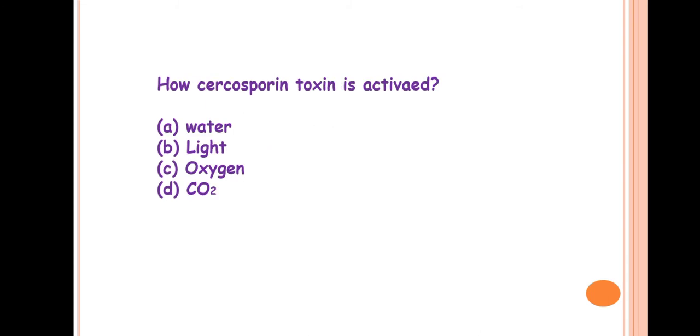Next question is: how is cercosporin toxin activated? So the answer is by light. Cercosporin is a toxin produced by the fungus Cercospora species. This is a photosensitizing agent that is activated due to presence of light and it produces the ROS species, that is the reactive oxygen species, which leads to the peroxidation of membrane lipids. So finally it affects the membrane lipids.